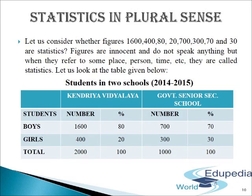Let us look at the table. The table gives us a numerical description of students in Kendriya Vidyalaya and government senior secondary school. Students are grouped as boys and girls and percentage is calculated for each group. Now in this context, the figures 1600, 400, 700, etc., have a statistical meaning.